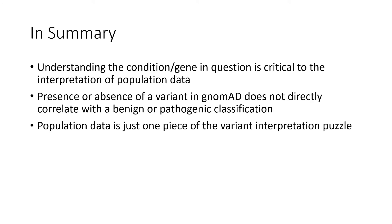In summary, I hope you come away from this talk knowing that the first step to applying population data to variant interpretation is to understand the nature of the gene or condition in question. Especially for disorders that are later onset or associated with reduced penetrance, or phenotypes not considered severe enough to merit exclusion, you may very well see pathogenic alleles in a population-based, relatively healthy cohort, and that shouldn't dissuade a pathogenic classification if that's where the other evidence is leading.